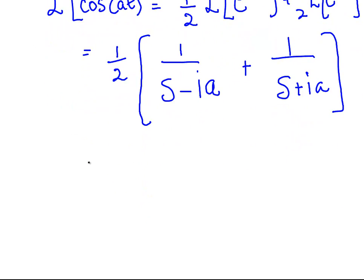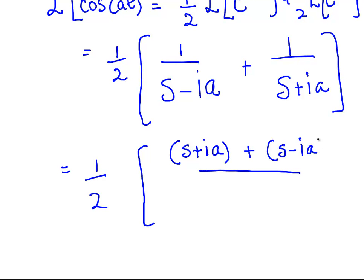So cross multiply them out, or multiply both sides, or cross multiply them essentially. What we have is one-half of (s+ia + s-ia) over (s-ia)(s+ia).